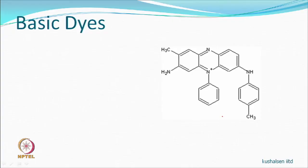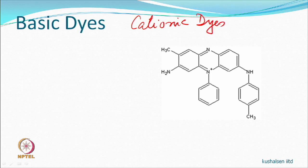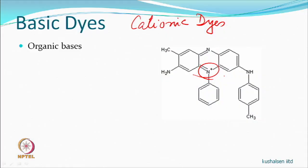Basic dyes — also called cationic dyes — carry a positive charge under the conditions in which they are used. Initially these dyes were used for cotton cationic fabrics using a different model, but they are mostly used for printing acrylic fibres or fabrics.